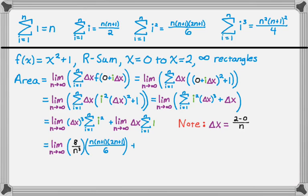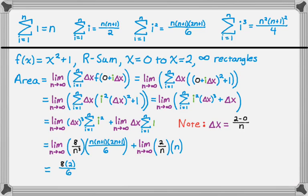And then plus the limit as n approaches infinity of delta x, which is 2 over n, times the sum of 1, which is just n. When you're doing this, you know you've done it right if the power of n in the numerator and the denominator are equal. If they're not equal, you've probably done something wrong. Don't ever forget that 2 that's in the numerator for the i squared summation.